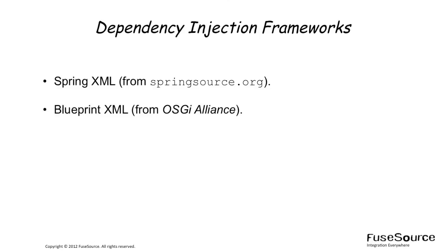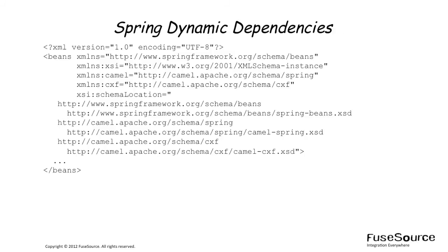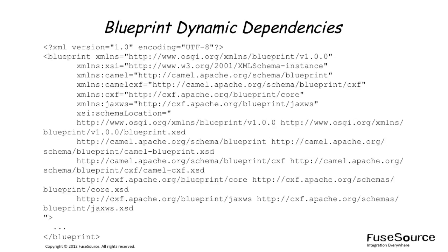Finally, some advice on using FABs with Blueprint. There are two dependency injection frameworks commonly used with Fuse ESB: Spring XML from SpringSource and Blueprint XML from the OSGI Alliance. Both frameworks can introduce dependencies that the FAB bundle is unable to detect. For example, in a Spring XML file, the Camel and CXF namespaces are effectively hooks that introduce dependencies on other JAR files and bundles. Ideally these dependencies would already be present in your project's POM file, but it is easy to forget to add them since your Java source code would usually compile and build successfully anyway. With Spring, this would lead to a ClassNotFoundException at deploy time.